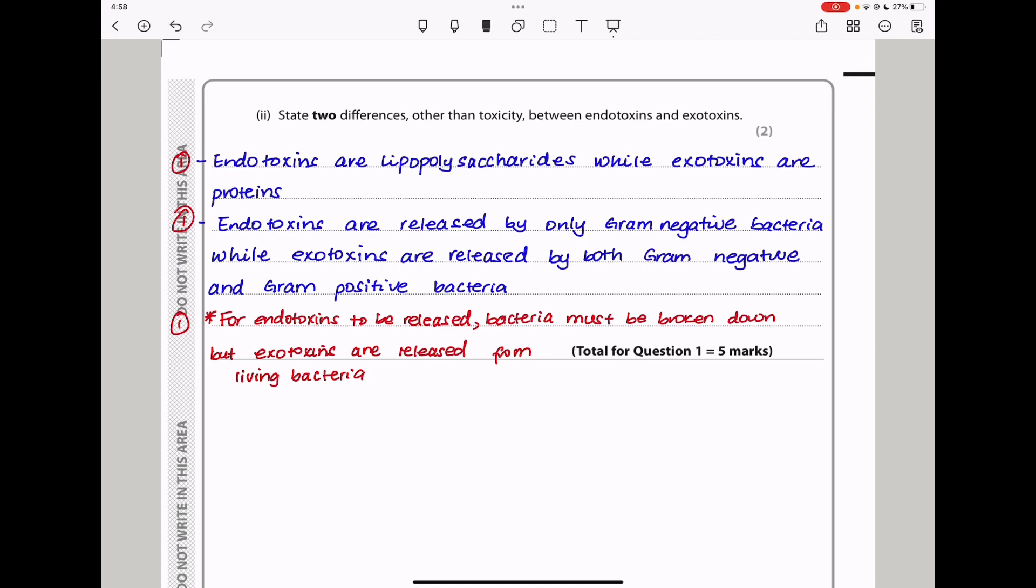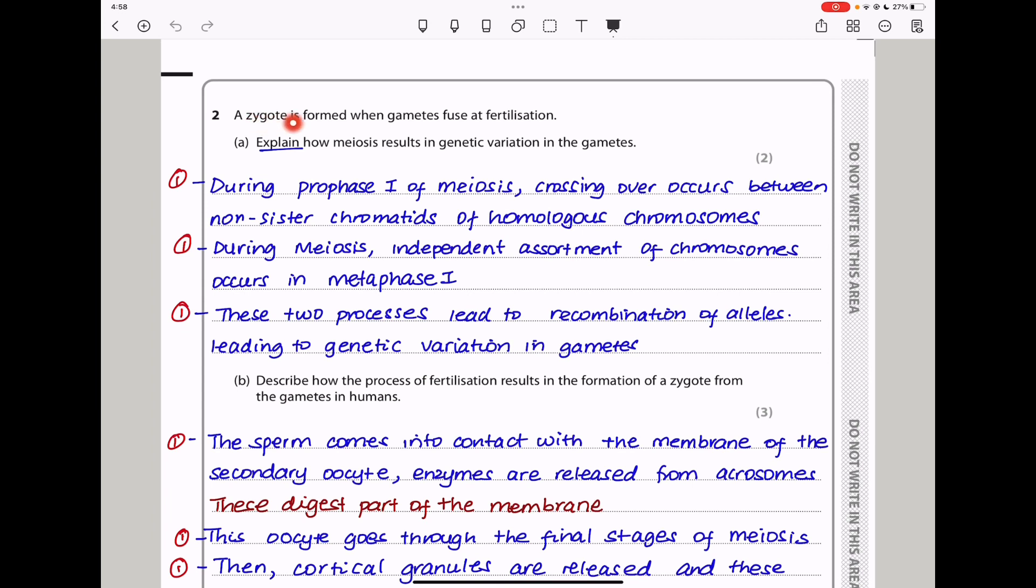Let's continue to question two. A zygote is formed when gametes fuse at fertilization. Explain how meiosis results in genetic variation in the gametes. Genetic variation can be caused by crossing over during prophase 1, as well as the random assortment in metaphase 1. During prophase 1 of meiosis, crossing over occurs between non-sister chromatids of homologous chromosomes. During metaphase 1, independent assortment of chromosomes occurs. These two processes lead to recombination of alleles, leading to genetic variation within the gametes.